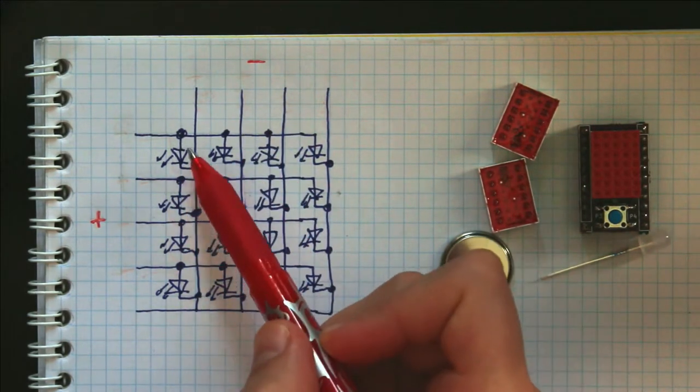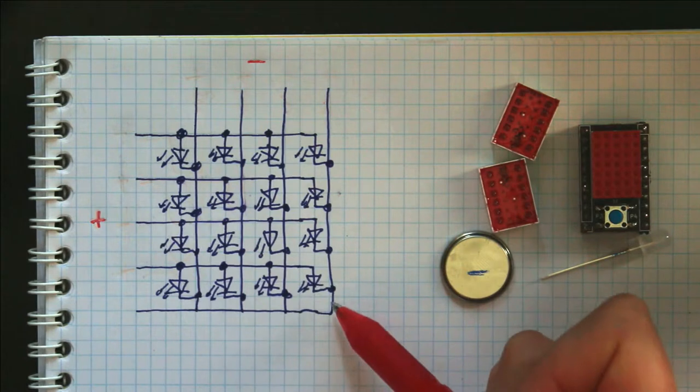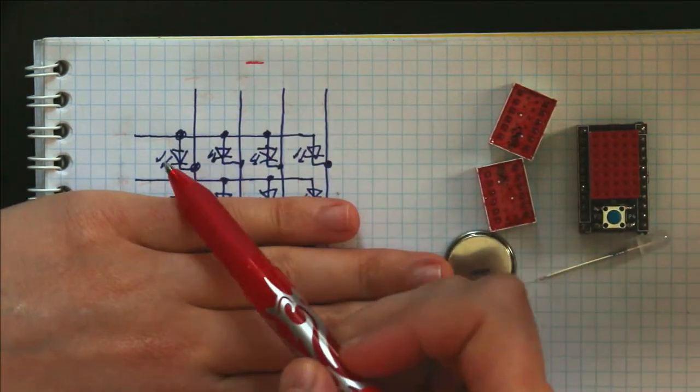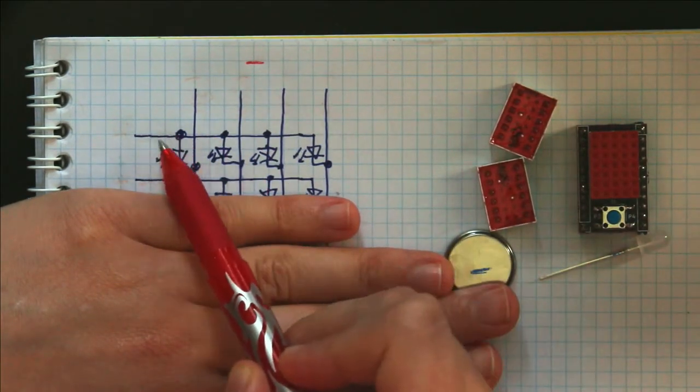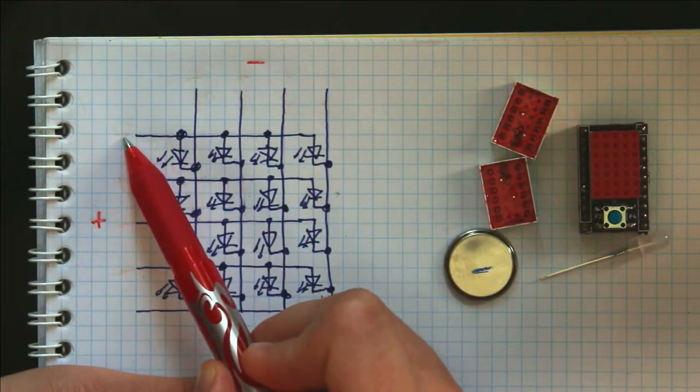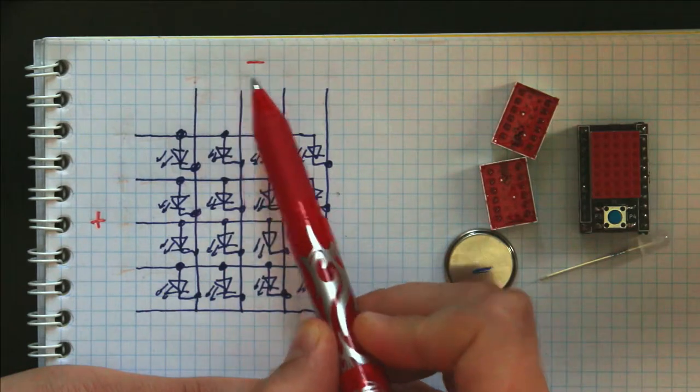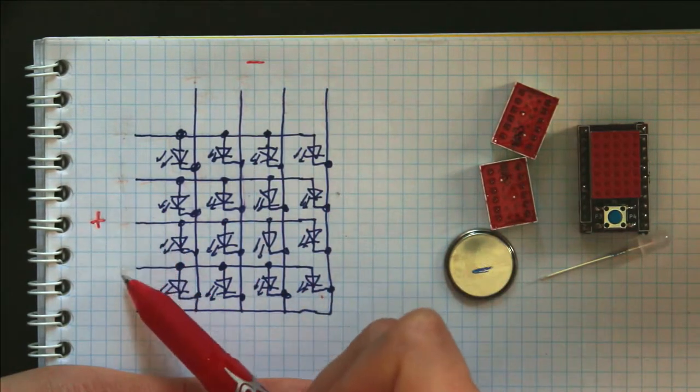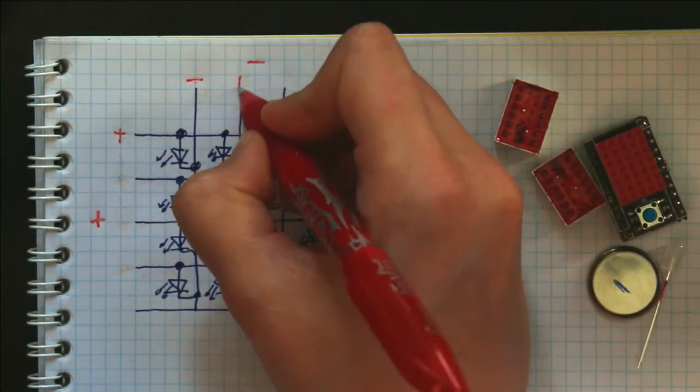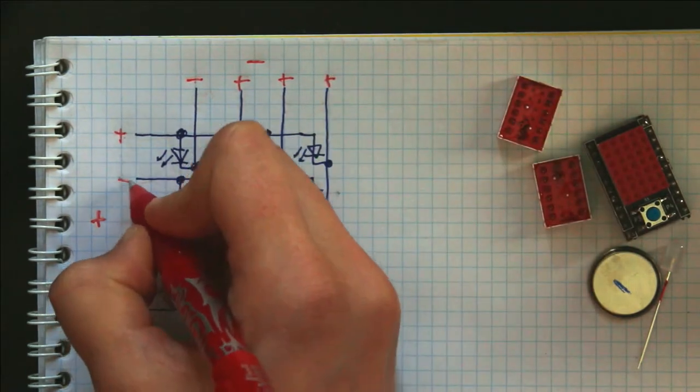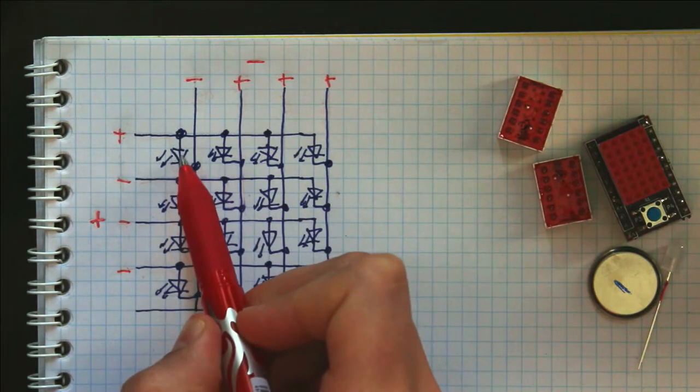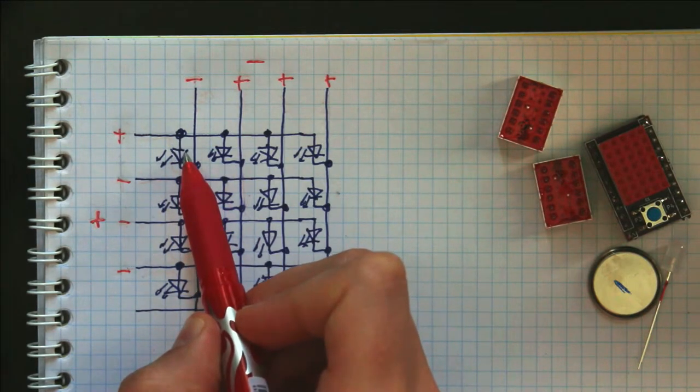So then, for example, if you wanted the diagonal to be illuminated, what you would do is control each one of these. So, for example, only this LED, we would connect this part to positive, this part to negative, and connect each one of these to positive, and this to negative. So, plus, minus, plus, plus, plus, minus, minus, minus, and that would cause only this LED to be illuminated.